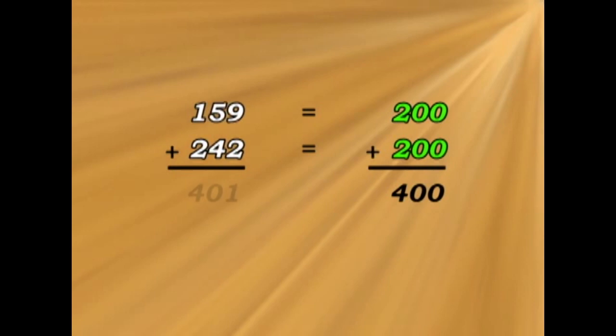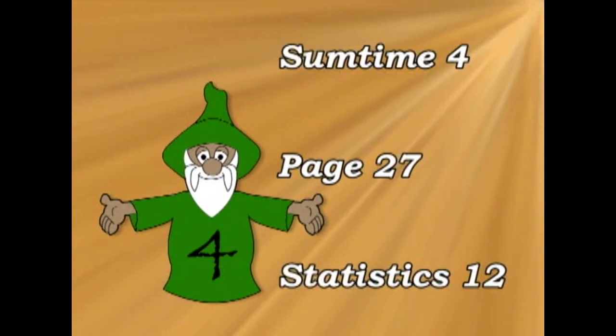So a hundred and fifty-nine becomes two hundred. Two hundred and forty-two becomes two hundred. So the rounded off number is four hundred, and the real number is four hundred and one. This is pretty useful when you're shopping. See you again soon.